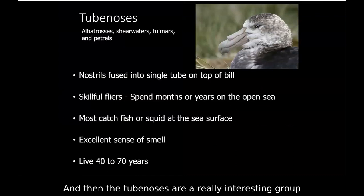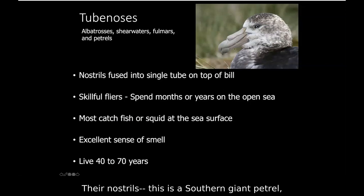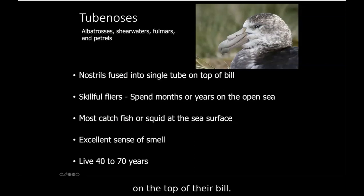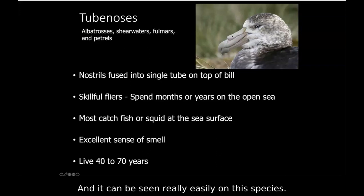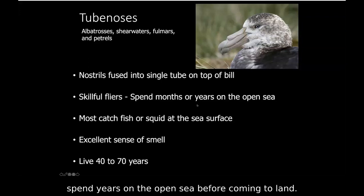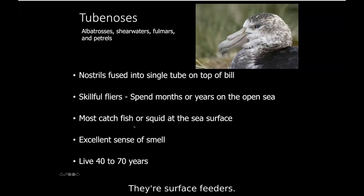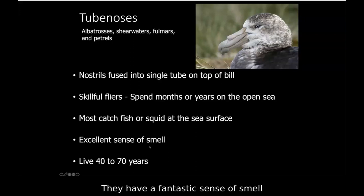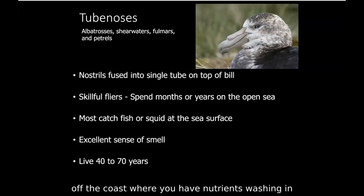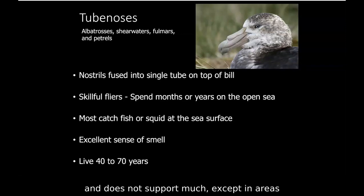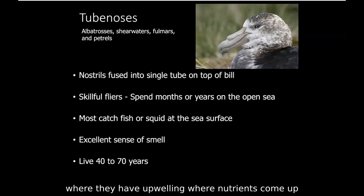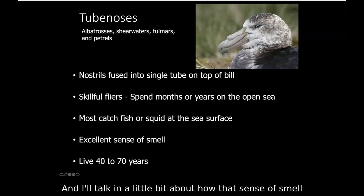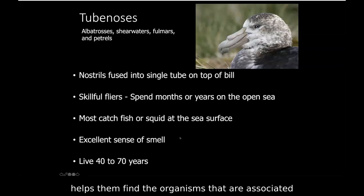Tube noses are a really interesting group. This is a southern giant petrel — their nostrils are fused in a tube on the top of the bill, easily seen on this species. They are very skillful flyers and will often spend years on the open sea before coming to land. They're surface feeders, eating fish or squid at the sea surface. They have a fantastic sense of smell that helps them find food in the open ocean, which is really a biological desert — most of the world's fisheries are off the coast, and the open ocean doesn't support much except in upwelling areas.